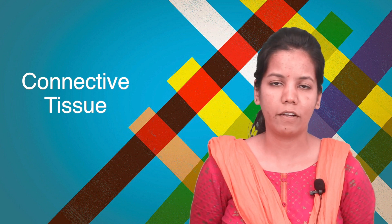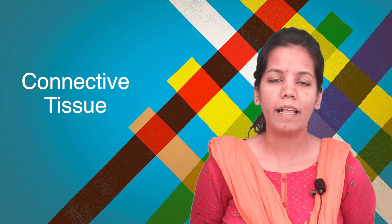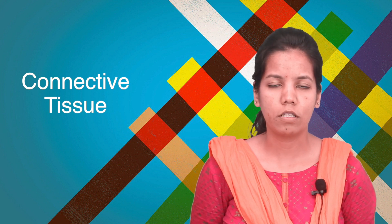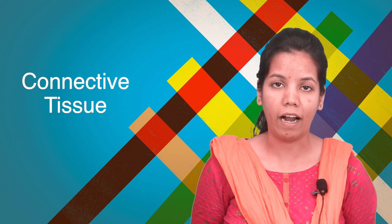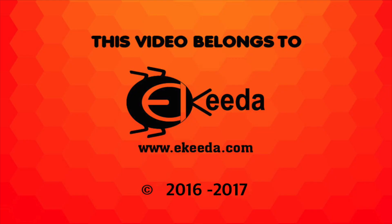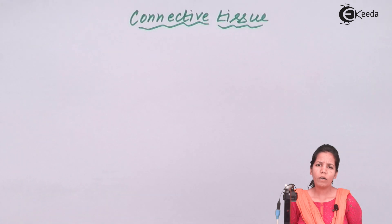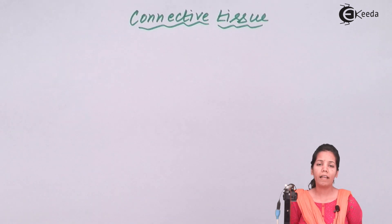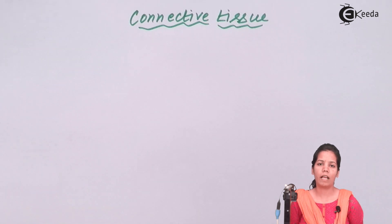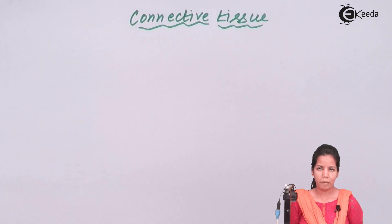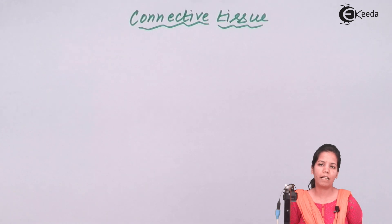If you break the word 'connective', it means a tissue that helps to connect two different organs — a tissue that's found in your heart. Connective tissues are the kinds of tissue that help and support all other tissues of your body. They are one type of animal tissue present in animals, and these tissues are basically made up of cells, matrix, and fiber-like substances.